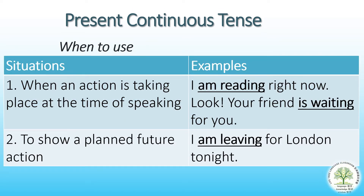Present continuous tense is used in two situations that you can see in the table above. First, when an action is taking place at the moment of speaking, like the example: 'I am reading right now.' Or second, to show a planned future action, like 'I am leaving for London tonight.'